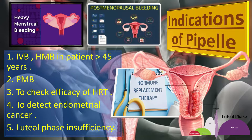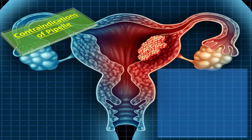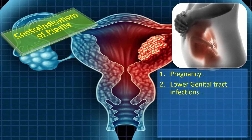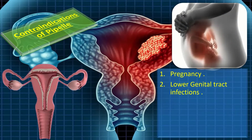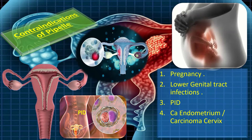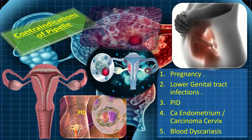The contraindications of pipel include first of all pregnancy, lower genital tract infections, PID, carcinoma endometrium or carcinoma cervix, and blood dyscrasias.